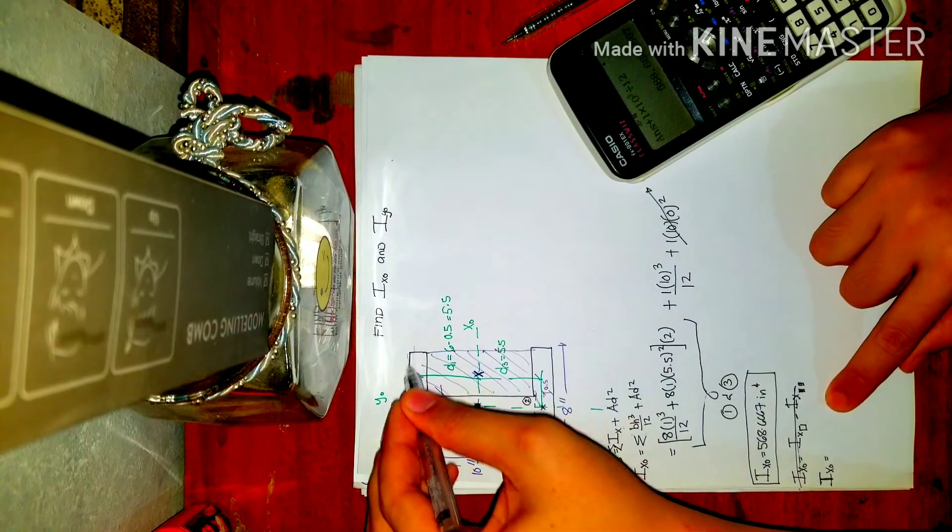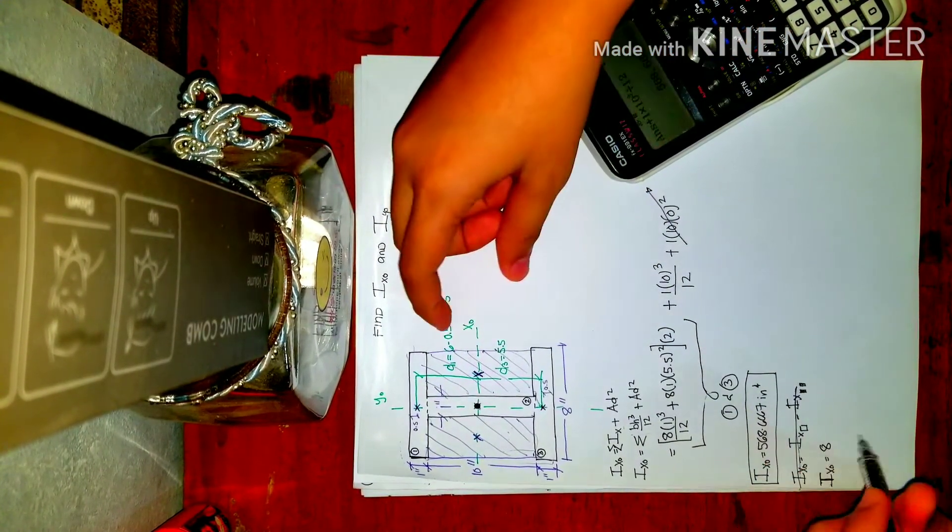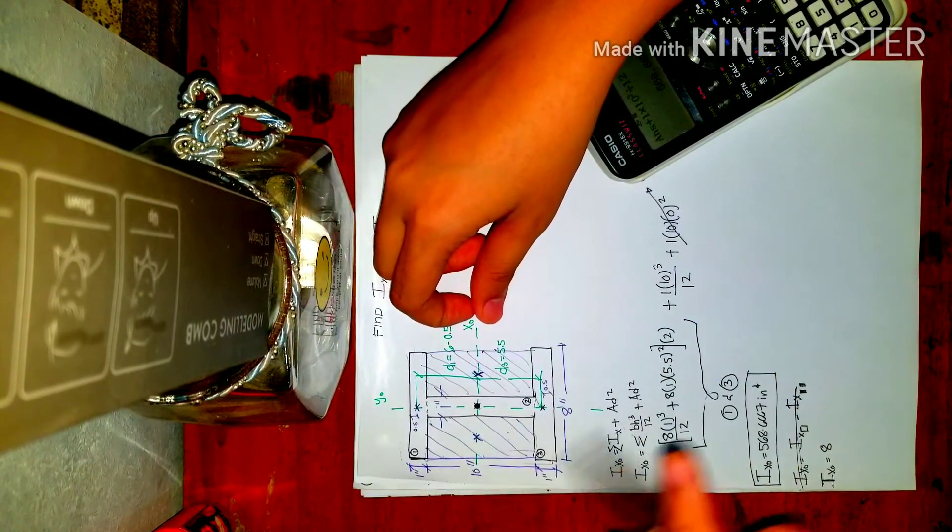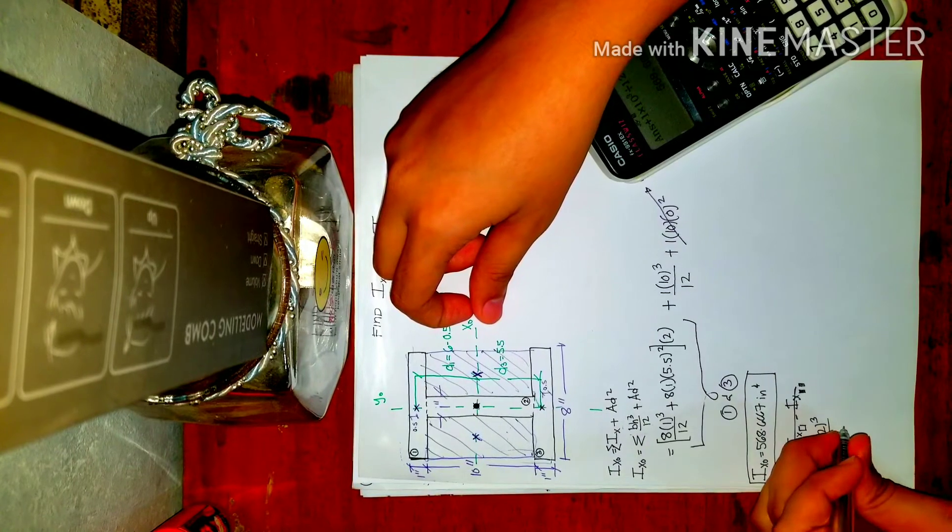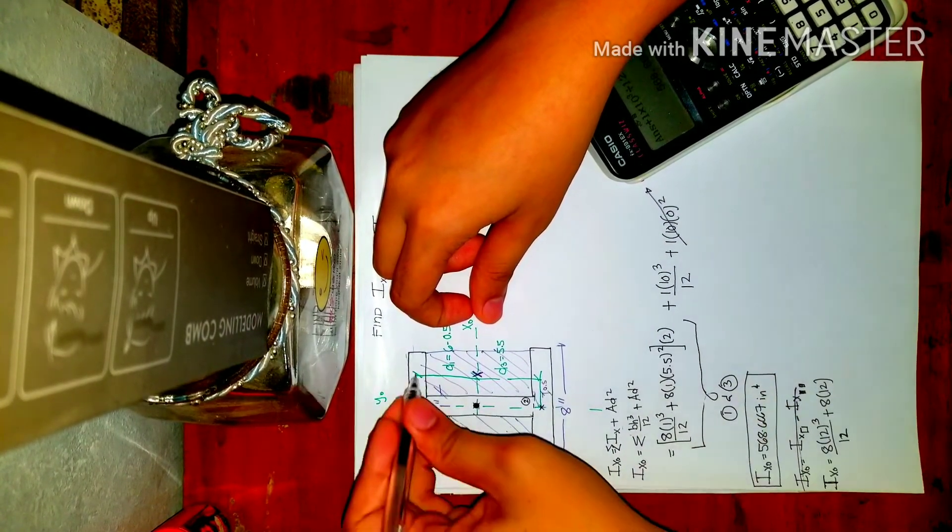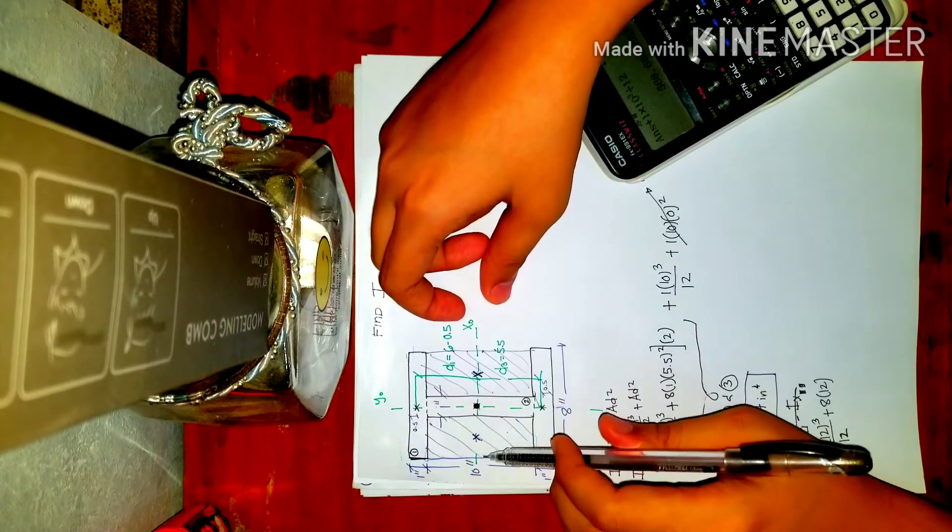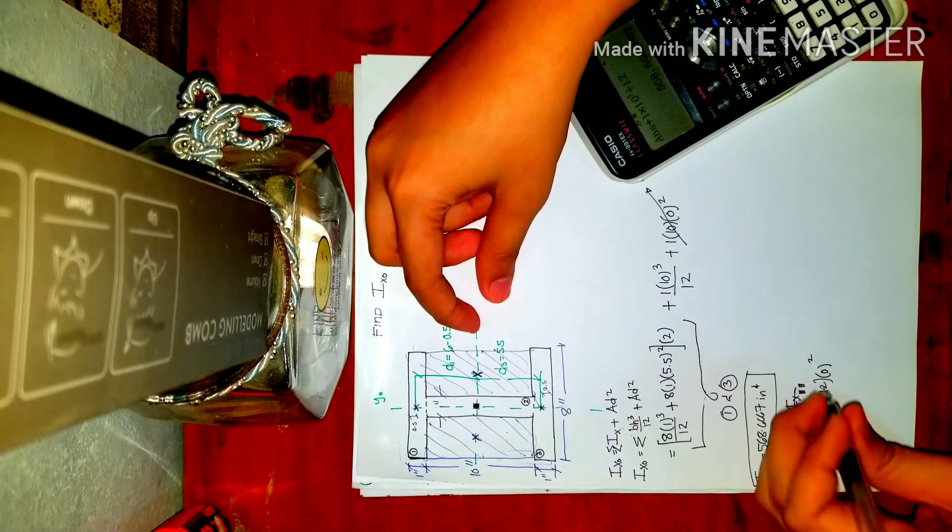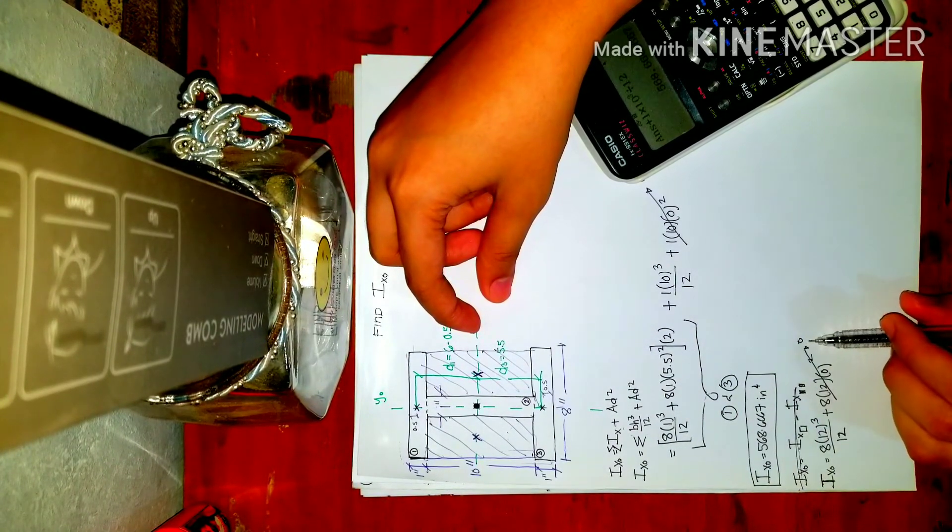So again, same thing, bh cubed over 12. So that will be 8. That's its base, 8. And then the height. So 10 plus 1 plus 1, so that will be 12. So 8 times 12 cubed over 12, plus Ad-squared. So 8 times 12. Since they coincide, the centroid of this big rectangle is also here. And then it coincides with this centroid x-axis. So that will be equals to 0. So we can just disregard it. That's why I did this earlier. So to not be confusing, I showed it too.